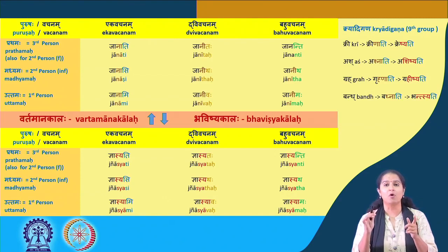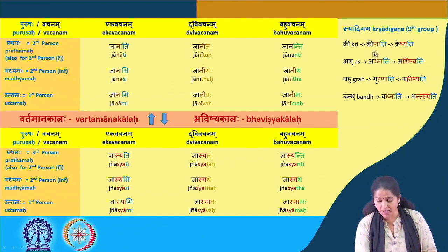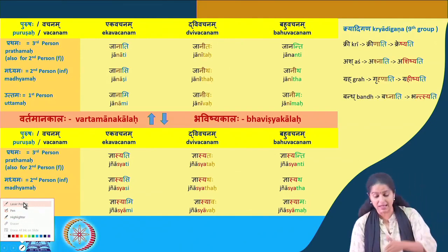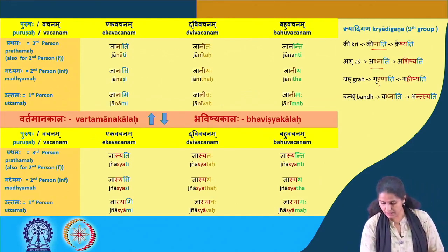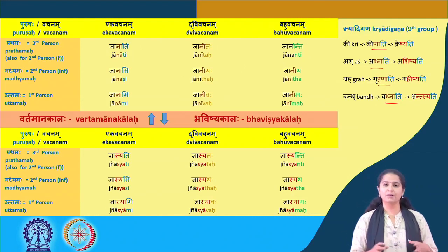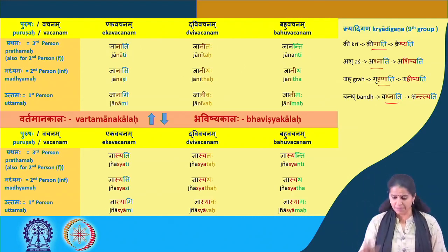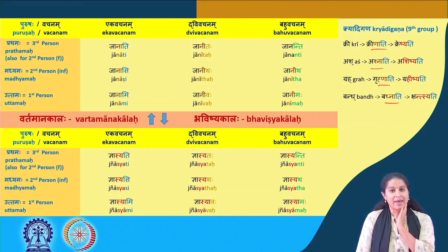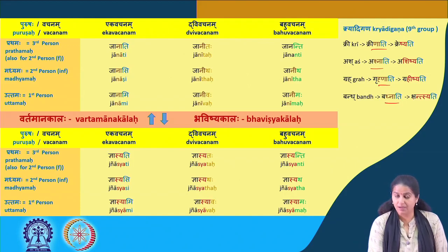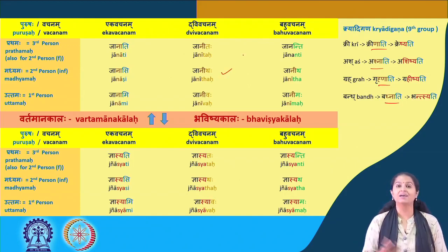What is the common characteristic of the verbs in this group? You see that there is a 'naa' that gets added: jnaa becomes jaannati, kri becomes krinati, ashnati, grahnati, badhnati — so the 'naa' is a typical feature of this particular group of verbs. Now make a sentence saying 'you two know Sanskrit well': yuvaam, janitaha, Sanskrit, and 'well' is samyak — yuvaam sanskritam samyak janitaha.